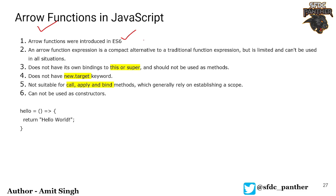Arrow functions have some limited functionality and cannot be used in all situations. They don't have their own 'this' or 'super' keyword, and they don't have 'new.target' keywords either. These are out of scope for this course. They are also not suitable for use with call, apply, or bind methods, and they cannot be used as constructors to create a class. We will see how constructors work with traditional functions in coming videos.